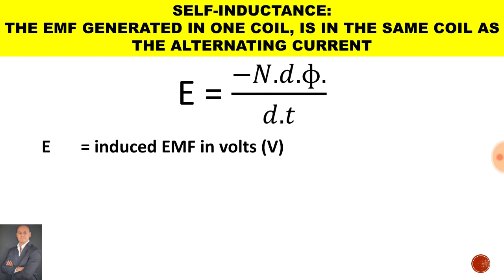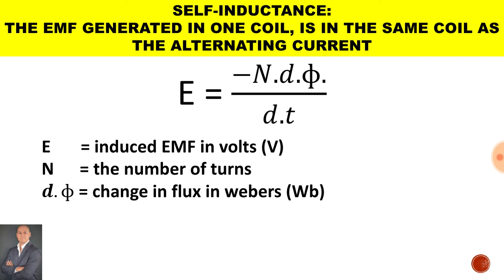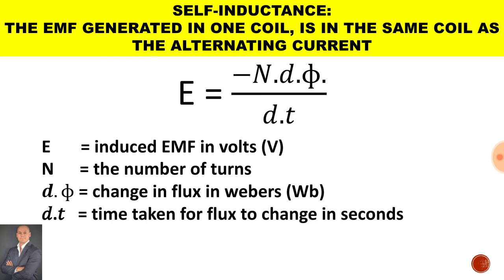In this equation, E is the induced EMF in volts, N is the number of turns, dΦ is the change in flux in Weber, and dT is the time that it takes for the flux to change, measured in seconds.